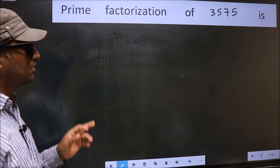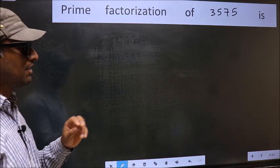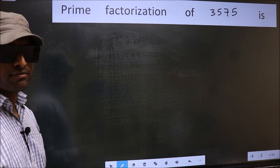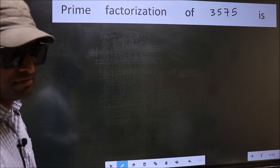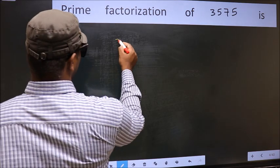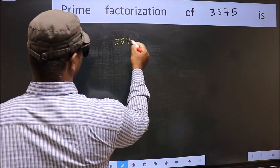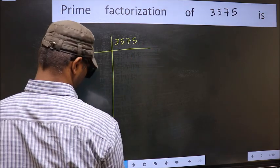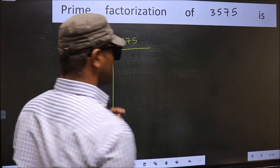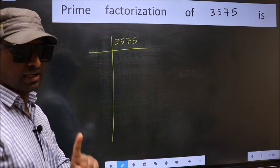Prime factorization of 3575 is. To do prime factorization, first we should frame it in this way. 3575. This is your step 1.